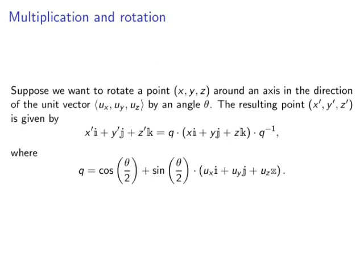So here is the actual rotation formula by quaternion multiplication. Suppose we want to rotate a point x, y, z around an axis pointing in the direction of the unit vector ux, uy, uz by an angle theta. Then the resulting point is given by this formula. Note that we are multiplying by q on the left but q inverse on the right. We have to do this for various technical reasons. This might look a little complicated, but it's surprisingly an efficient way of doing this calculation and is frequently used in computer graphics processing.